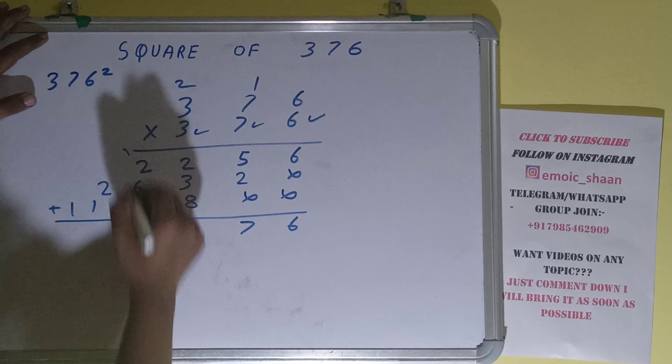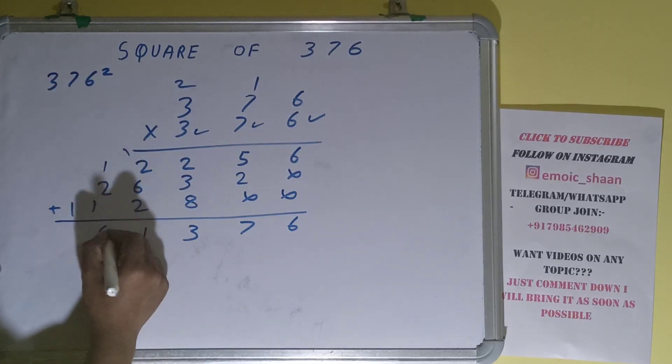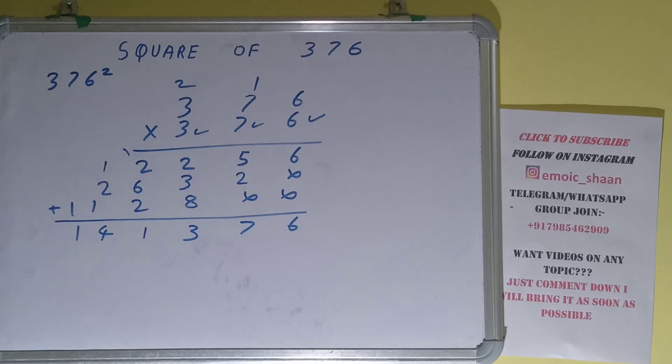Okay, so the answer will be 141,376. That will be the square for the number 376. So that's it. If you found the video helpful, please hit the like button, do consider subscribing, and thanks for watching.